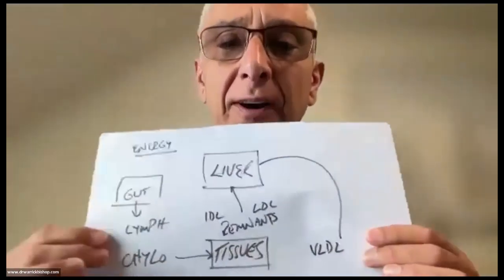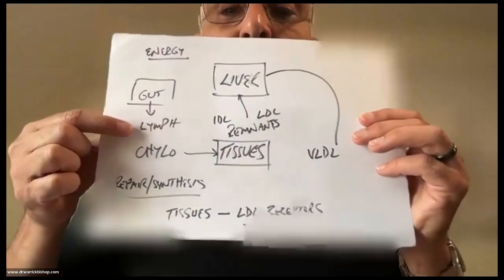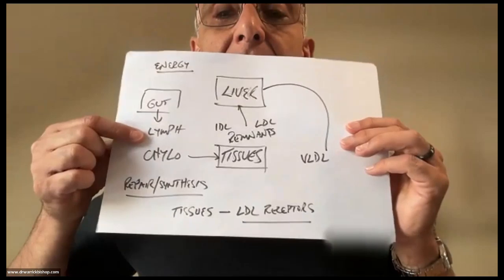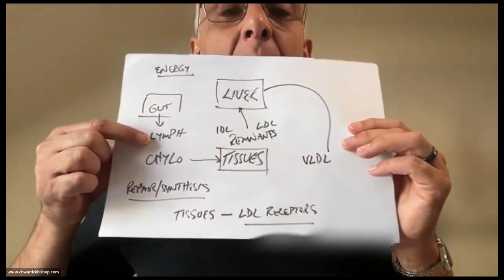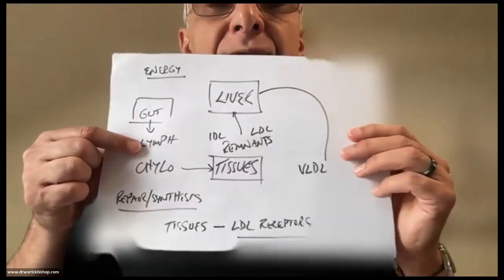Today I want to talk about something to make sure we get our heads around how lipids move in the body. When we think about lipids and lipoprotein particles moving around the body, the main role of those lipoprotein particles is actually to deliver an energy source. The gut will absorb fats which get bundled up into chylomicrons and get into the bloodstream by the lymph circulation.